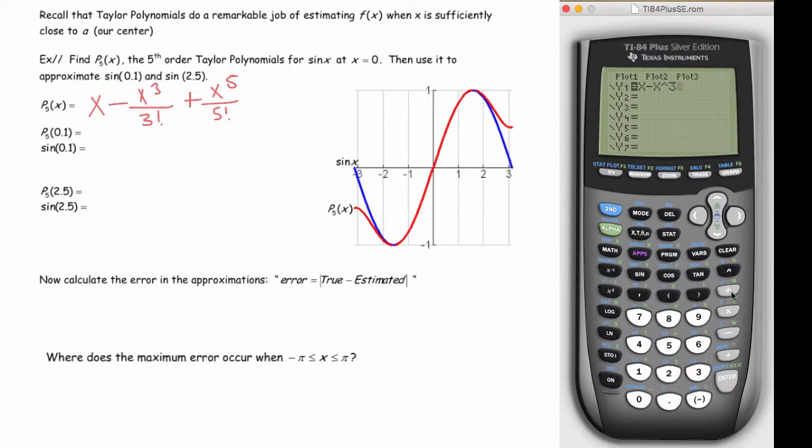So let's quantify just how good a job it does. I'm going to plug in 0.1 into my polynomial. You can do that on the calculator by putting this into y1. And then you can actually do function notation on the calculator. So I did y1, I put the polynomial into y1 and I did y1 of 0.1. And you end up getting 0.998334167.